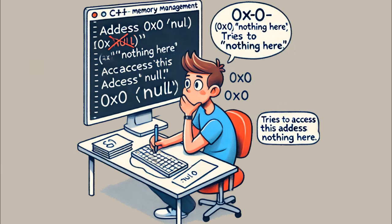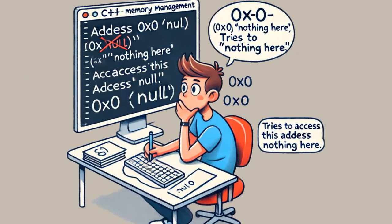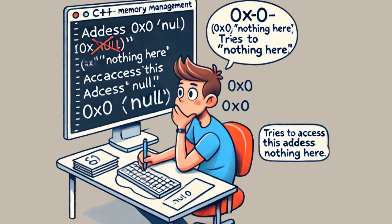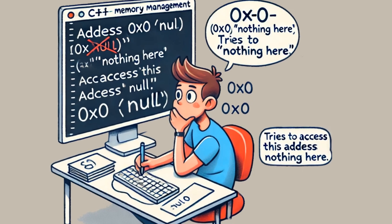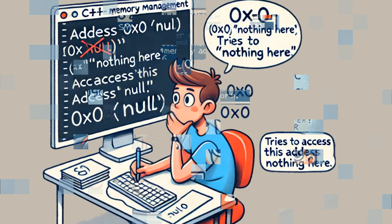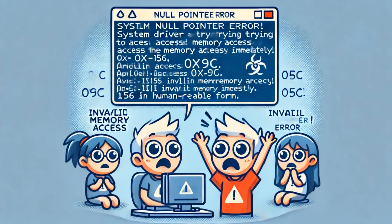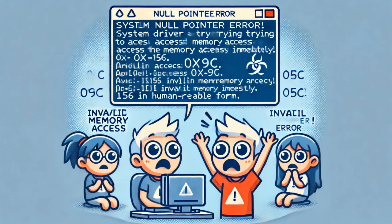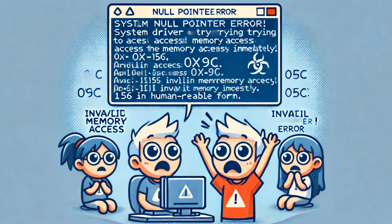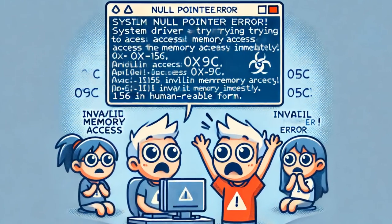The C++ programming language requires careful memory management. In this language, the address 0x0 has a special meaning and signifies "nothing here." If a programmer tries to access this address without checking if an object is valid, the program crashes immediately. In this incident, a null pointer error occurred in the system driver. This error happened while trying to access the memory address 0x9c, which is 156 in human-readable form, and accessing this invalid memory region caused the program to terminate immediately.